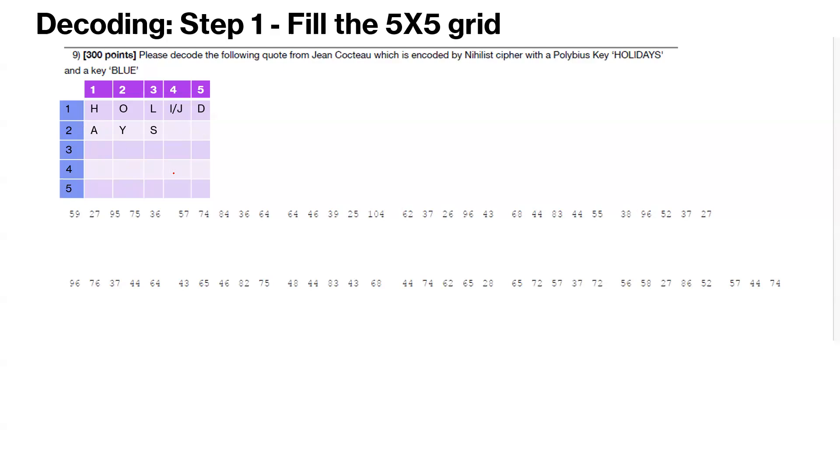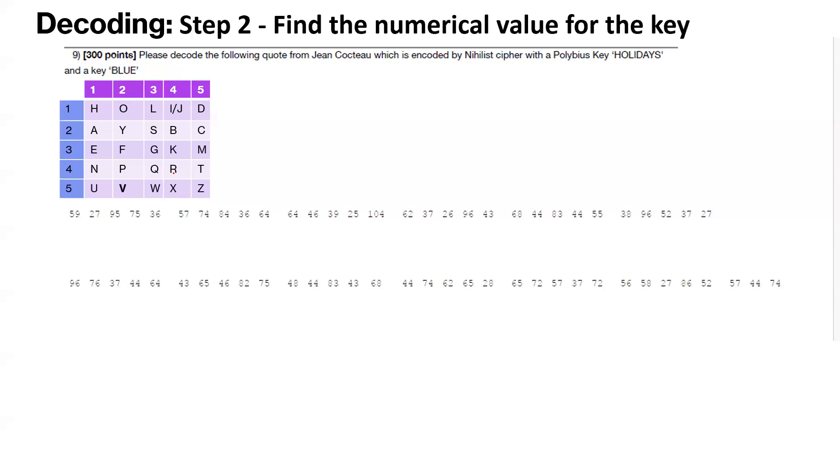So we have completed our first step here. Now we move on to the second step, which is to find the numerical value for the key. So our key is blue. So we find where blue B appears. So B appears here, which is, so the numerical value for B is 24. Second row and fourth column.